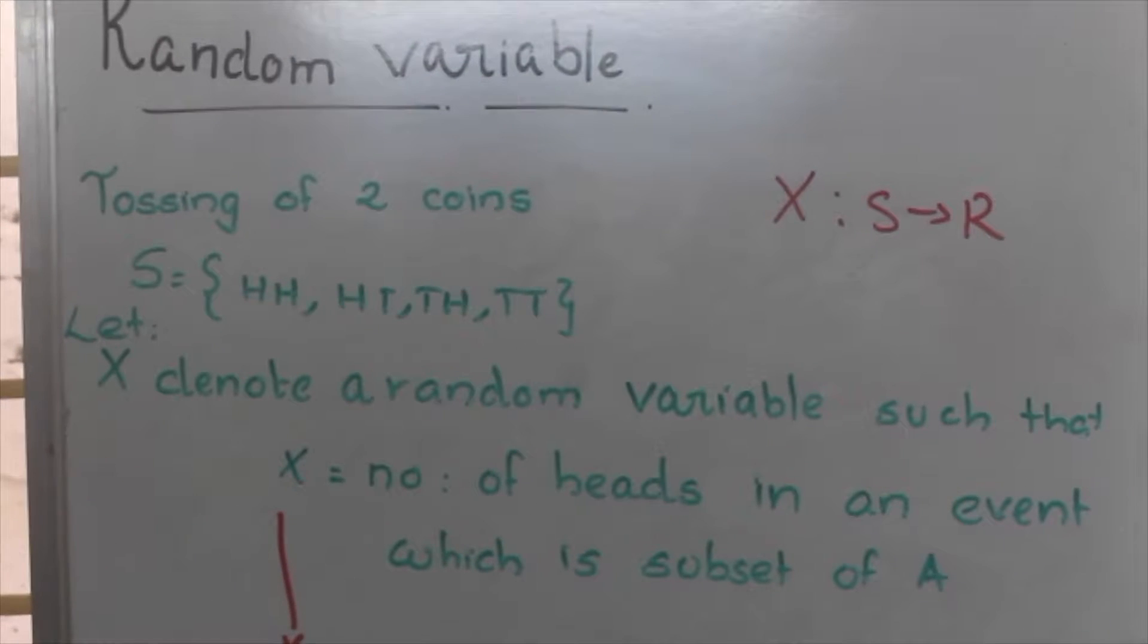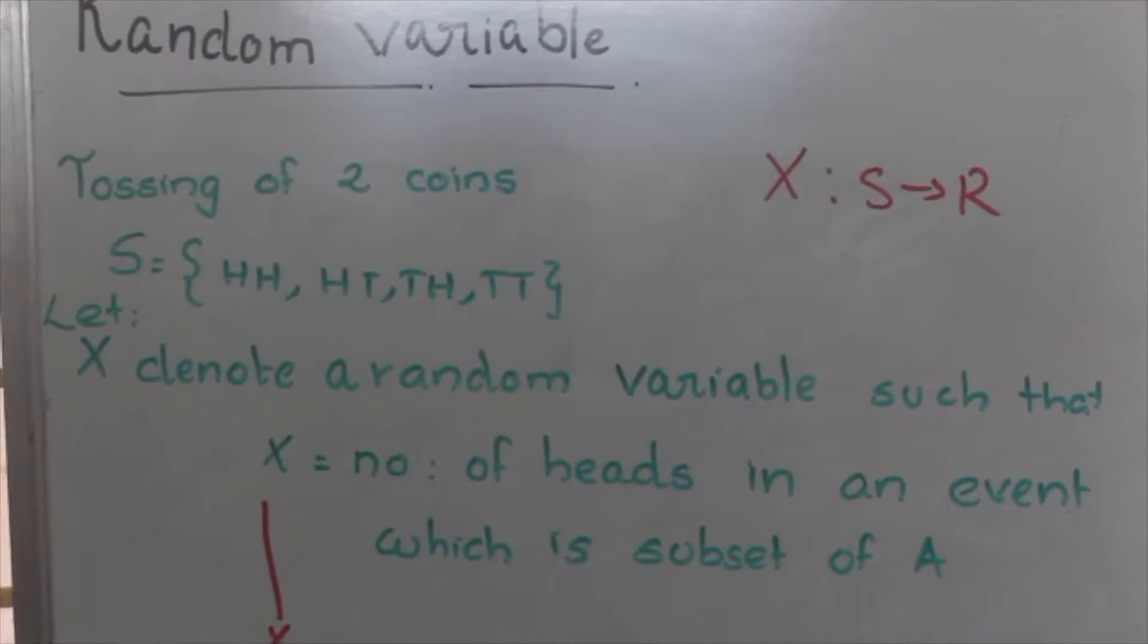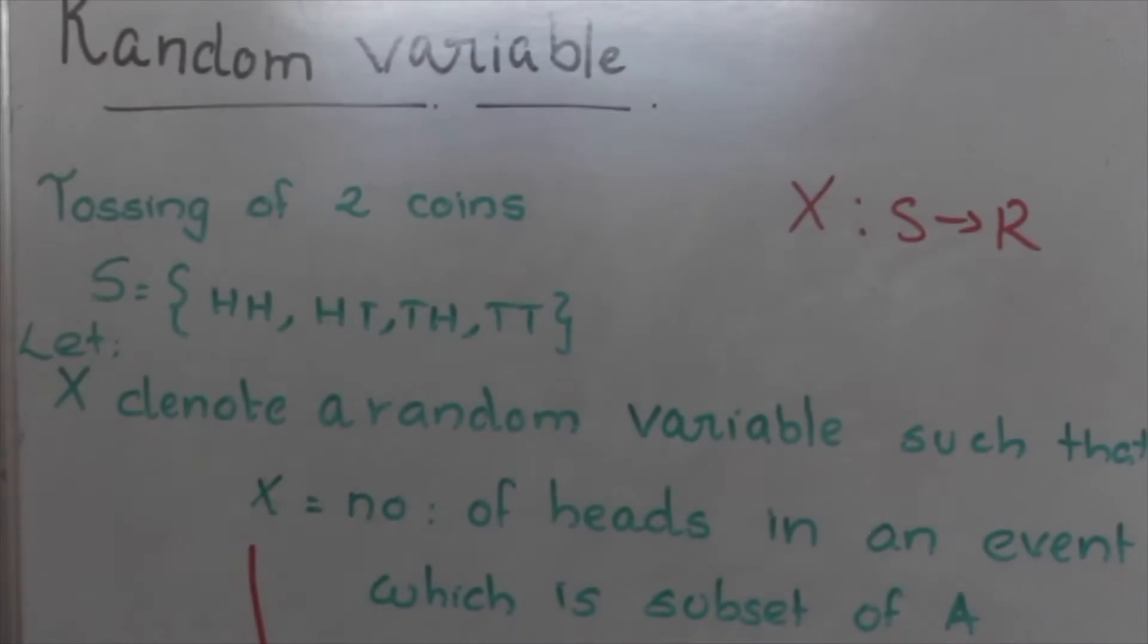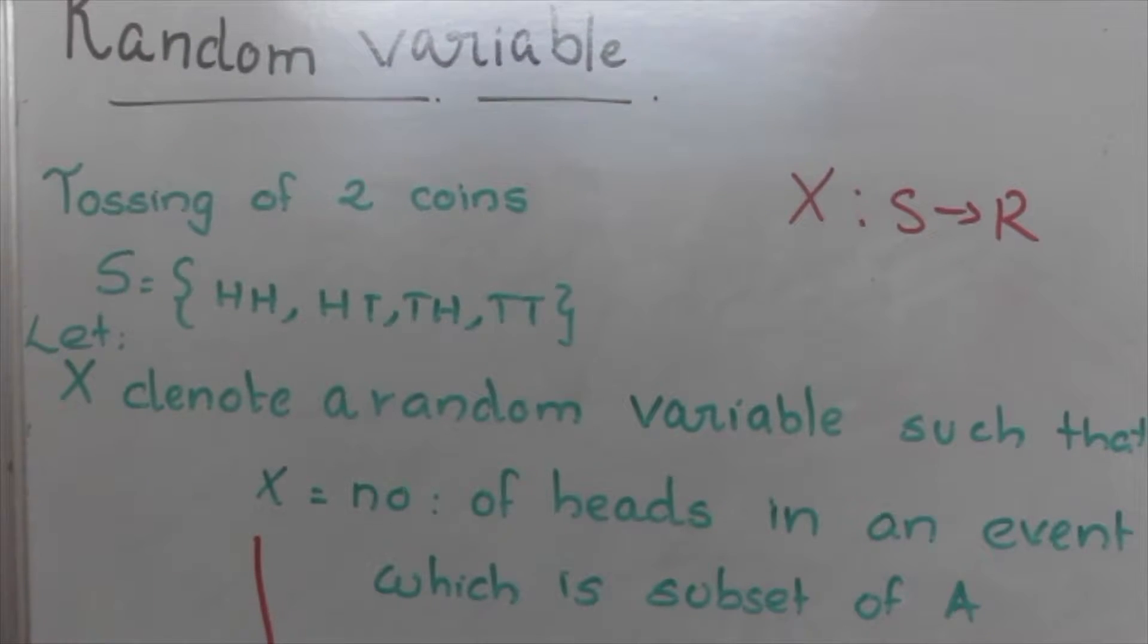We are going to explain what is random variable and now we are looking at tossing of two coins to explain the essentiality of random variable.